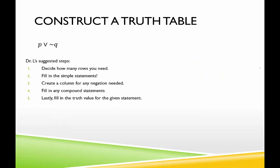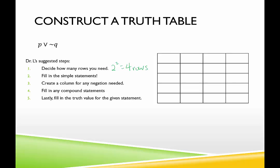First example: p or not q. How many rows do we need? We have two simple statements, p and q, so that's two squared — we need four rows. Then we fill in the simple statements. We always start with the most basic statements. Some students might skip q and go straight to not q, but with truth tables we always start with the simple statements and build from there.